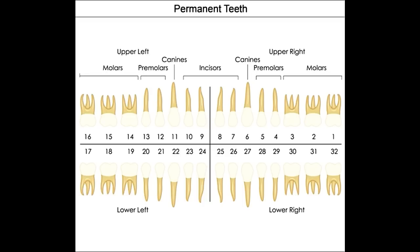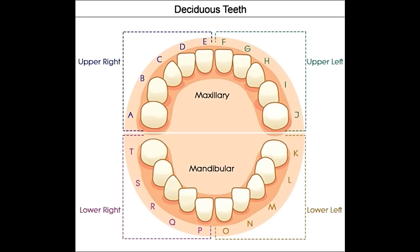The second primary molar in the upper jaw on the right is assigned the letter A, and the numbering continues in alphabetical order, with the second primary molar on the left in the upper jaw being assigned the letter J. Similarly, in the lower jaw, the second primary molar on the left is assigned the letter K, and the numbering continues in order till T, which is assigned to the second primary molar on the right.